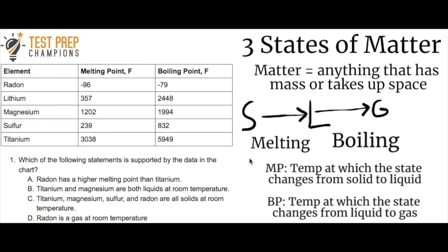With that established, let's define both melting point (MP) and boiling point (BP). The melting point is the temperature at which the state changes from a solid to a liquid — in other words, the temperature at which matter melts. The boiling point is the temperature at which the state changes from a liquid to a gas — the temperature at which something boils.